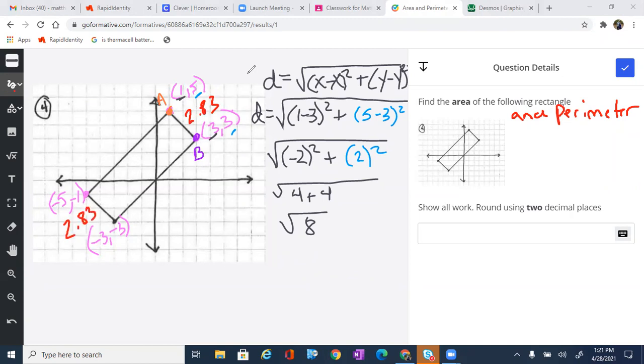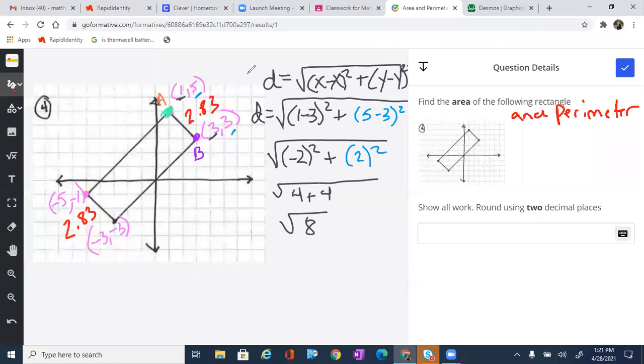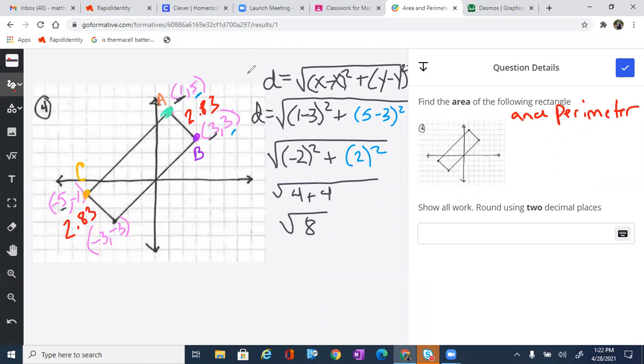Now, once we have that, we're going to use the distance formula to find the longer side. We can use any points on the longer side. To make life easy, I am going to use point A again. And then I am also going to use this one. We'll call this point C down here. We do the exact same thing. We start by subtracting the x's. So 1 minus negative 5. I'm going to write that 1 minus negative 5 squared.